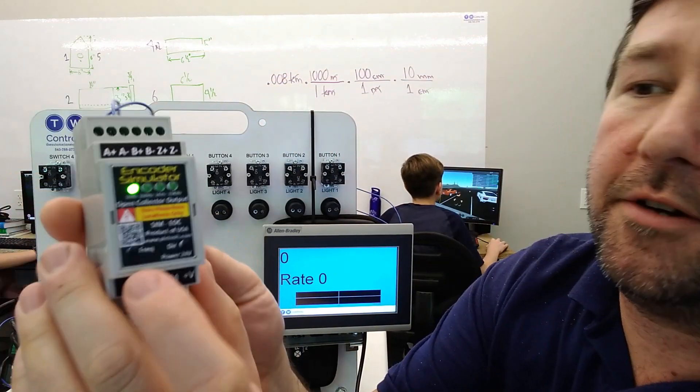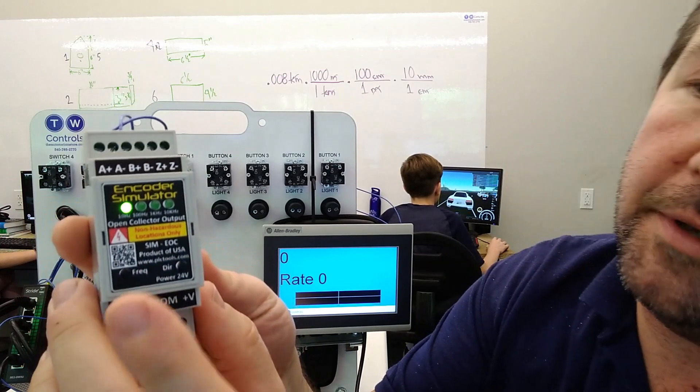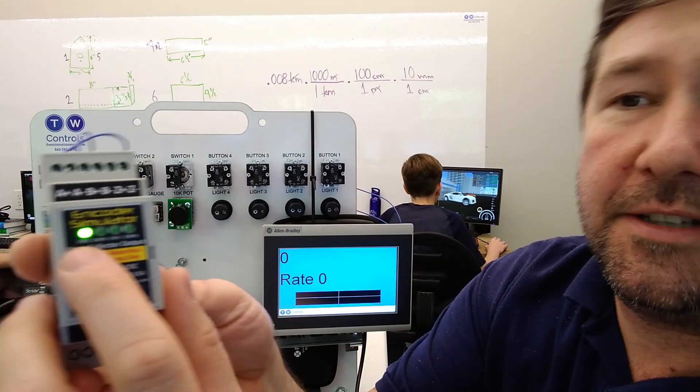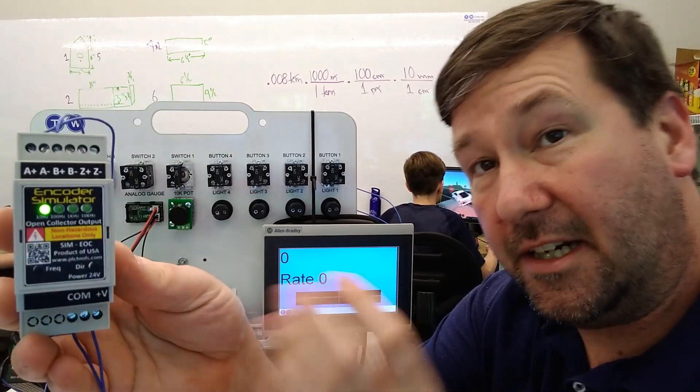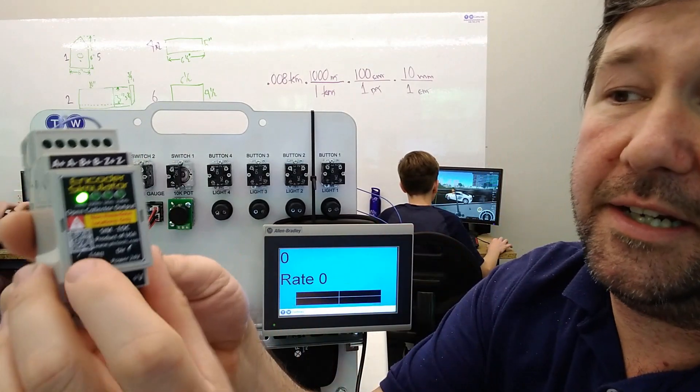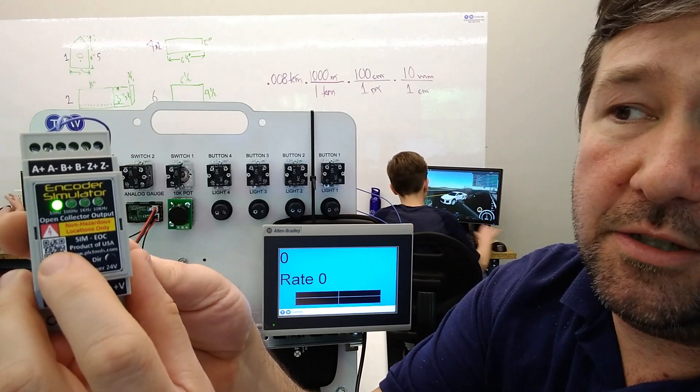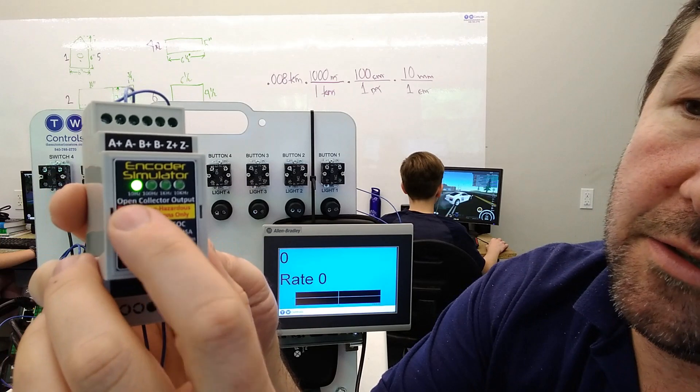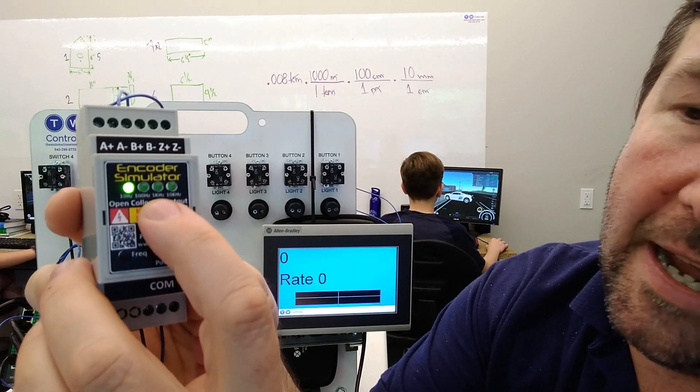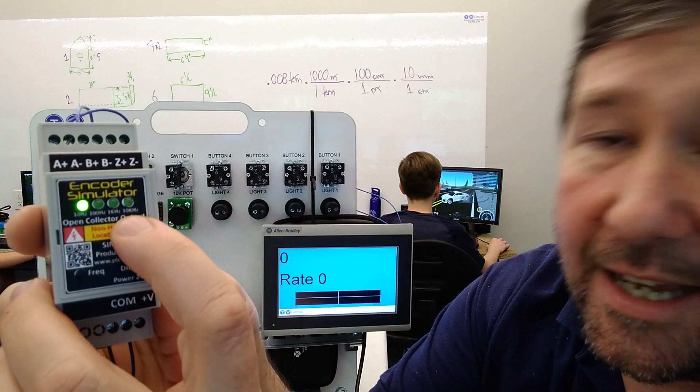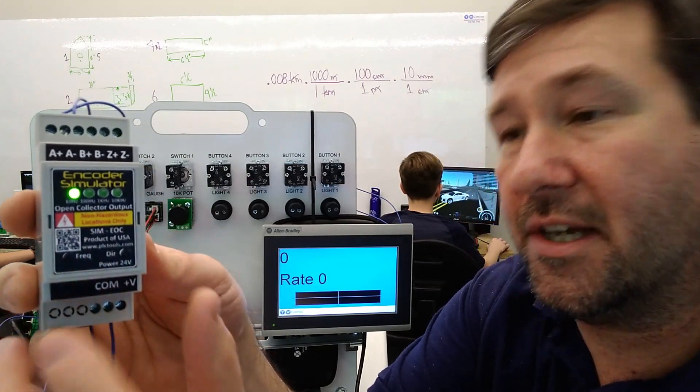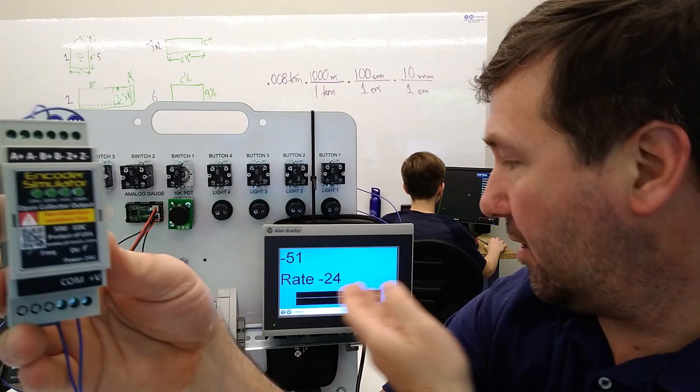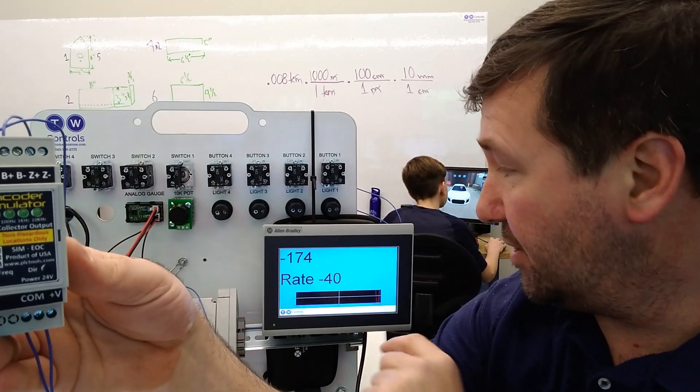But to operate our encoder simulator, there's two simple buttons on the front of it. You have a frequency and you have a direction. And so when the light is solid, the encoder is not moving or you're not rotating. And the frequency button, you can scroll right through your frequencies. And we have 10 hertz, 100 hertz, a thousand hertz or one kilohertz and 10,000 kilohertz or 10 kilohertz. And if we press the first time, then we're going to start going negative or in the reverse direction.